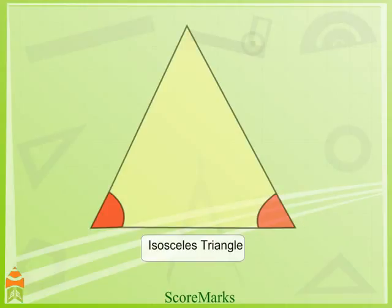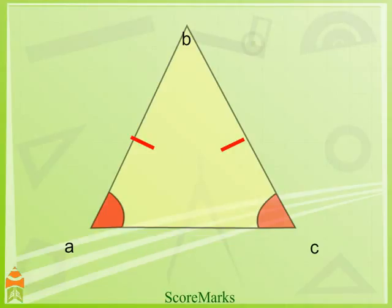Isosceles triangle: a triangle which has two sides equal in length and angles opposite to equal sides are equal.